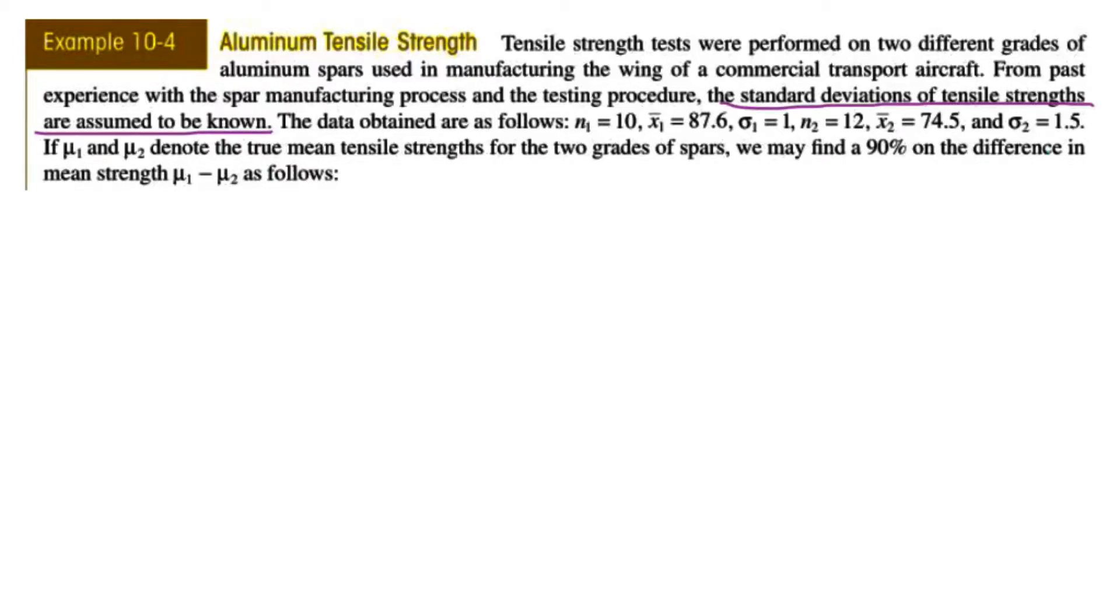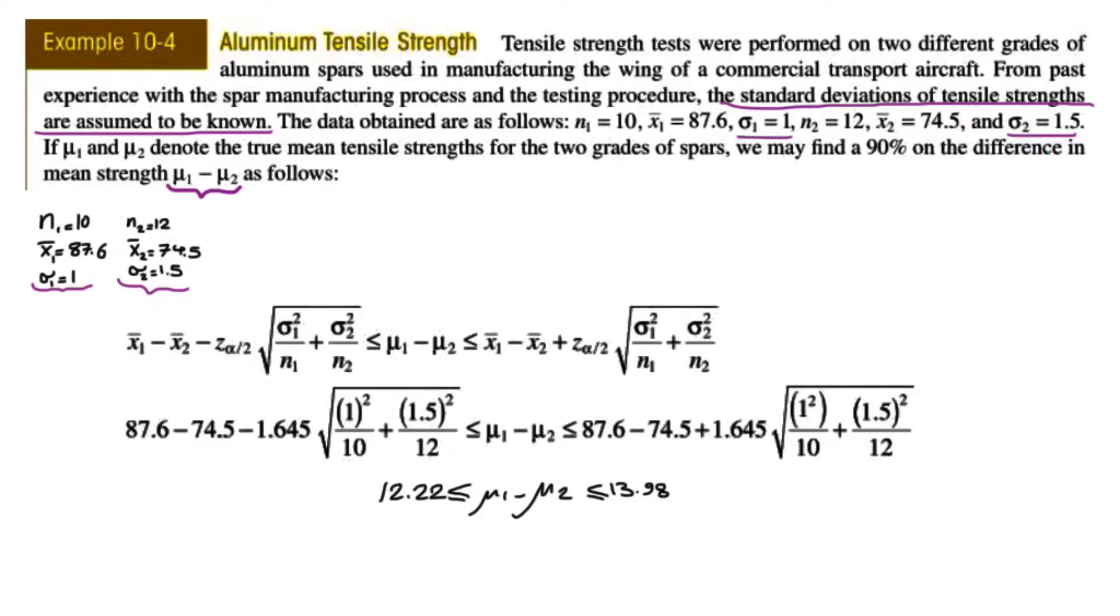So the information that is given is that you have the standard deviation of the population σ1 and σ2, also you have the sample size from each type of aluminum that has been used, and you also have x̄1 and x̄2. So the formula for μ1 minus μ2 was x̄1 minus x̄2 minus z_{α/2} multiplied by the square root of σ1² over n1 plus σ2² over n2.